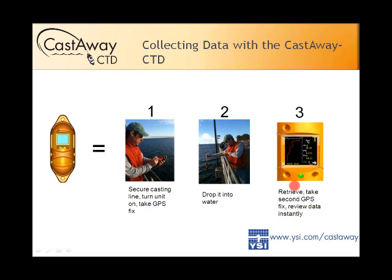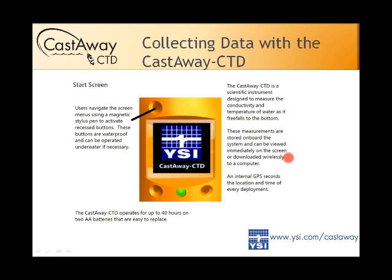Make an adjustment, do another cast, go to a different area. It saves a lot of time without having to hook it up to a machine to review data. The standard drop is one meter per second — that's where the 5 Hz comes from: five data points per meter. Can you drop it faster? Yes, but you reduce the number of points per meter. At two meters per second, you get five points over two meters instead of five points over one meter.